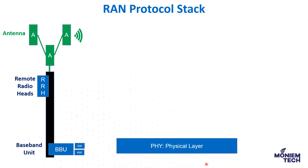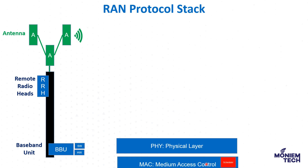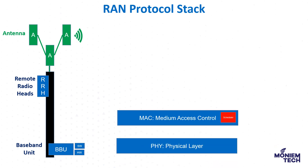The physical layer is the first protocol in the RAN protocol stack, and it is responsible for coding, modulation, and different types of layer one functions. The second one, and a most important one, is Medium Access Control, or MAC.